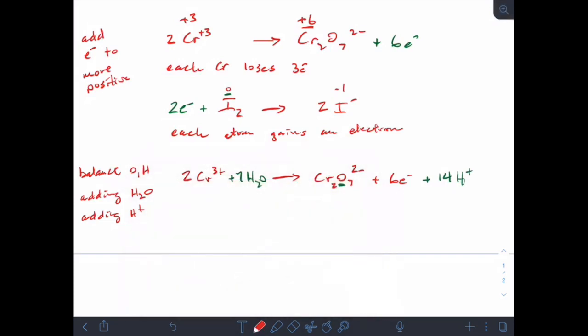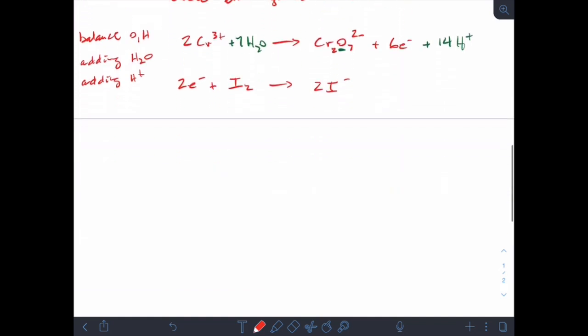And then our iodine half reaction has no oxygens or hydrogens. So I don't have to add anything there. Sometimes you have to add some to both sides, to both half reactions. So now our next step is to balance the electrons so they cancel. So in order to do that, I may need to multiply one equation or the other or both in order to get the same number of electrons in both equations.